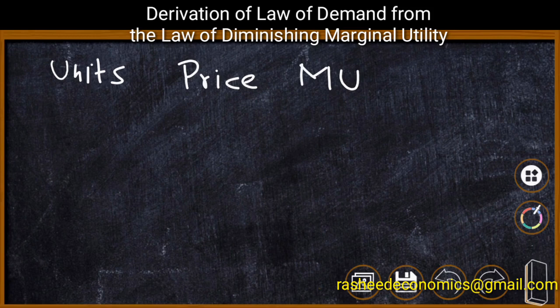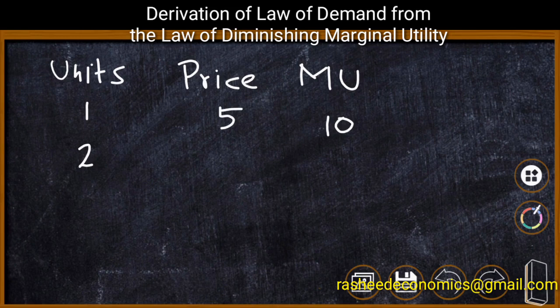Suppose a consumer is using the first unit of the commodity. Price of the commodity is 5 and marginal utility derived is 10. Here, the consumer is getting 10 units of utility and paying only 5 units. Therefore, the consumer will have a tendency to increase consumption. Automatically, he will increase consumption to the second unit, where he needs to pay 5 rupees again but receives 8 units of utility.